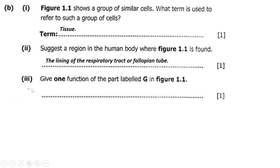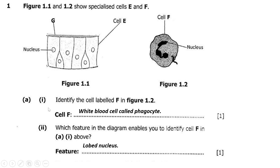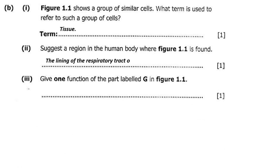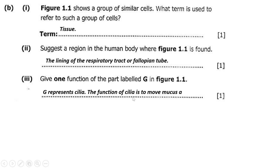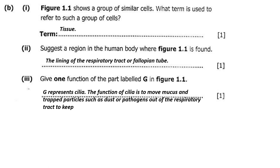Roman numeral three asks for one function of the part labeled G in figure 1.1, which refers to the elongated strands — the cilia. G represents cilia. The function of cilia is to move mucus and trapped particles such as dust or pathogens out of the respiratory tract to keep the airways clean.